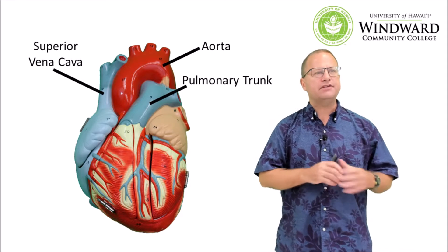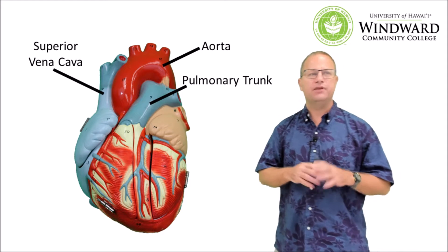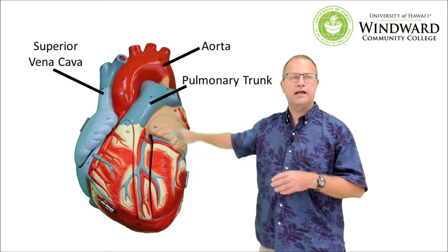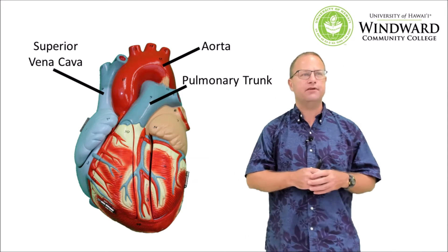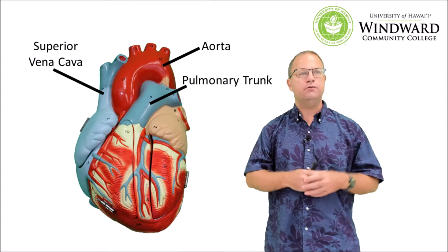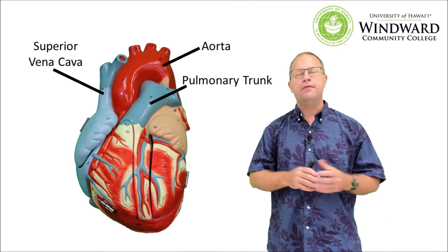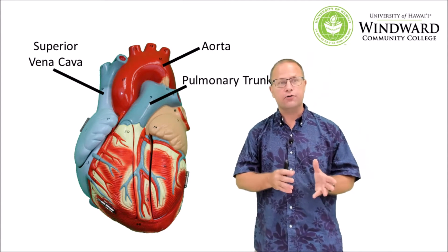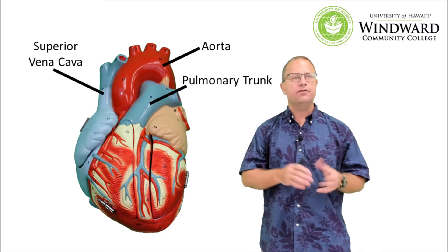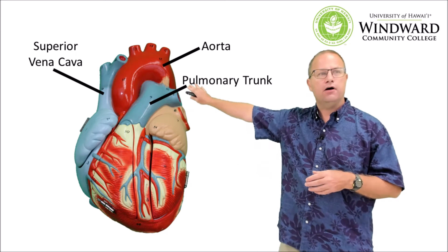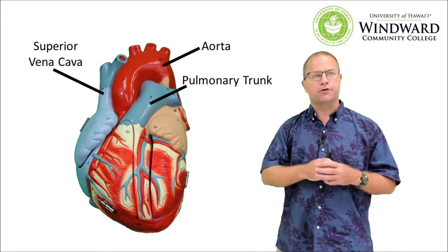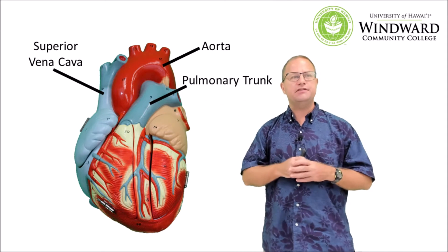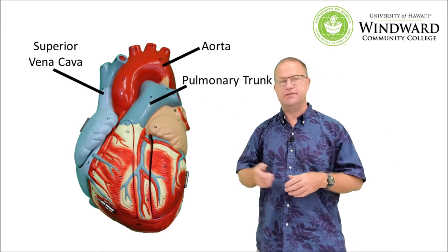There are other things we need to talk about. The major vessels coming out of the heart — right here we can see three of them: the superior vena cava, which is a vein; the aorta, which is a large artery; and the pulmonary trunk, also a large artery. Now we're going to go through each of these vessels in some detail.